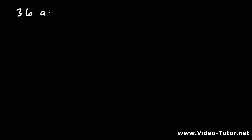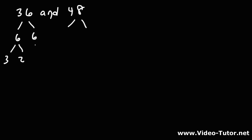Now let's try another example. Let's find the GCF between 36 and 48, so let's use prime factorization first. Feel free to pause the video if you want to try this example. 36 is 6 times 6, and 6 is 3 times 2. So these are the lowest factors of 36: 3 times 2 times 3 times 2.